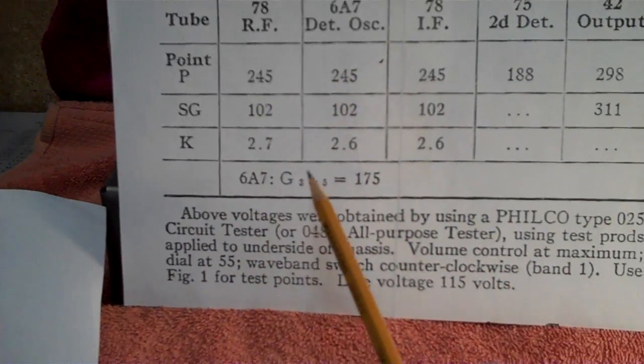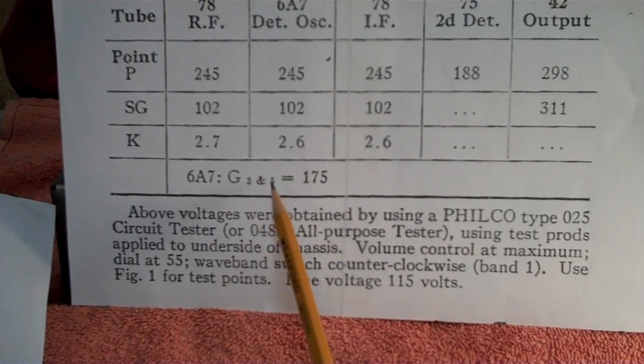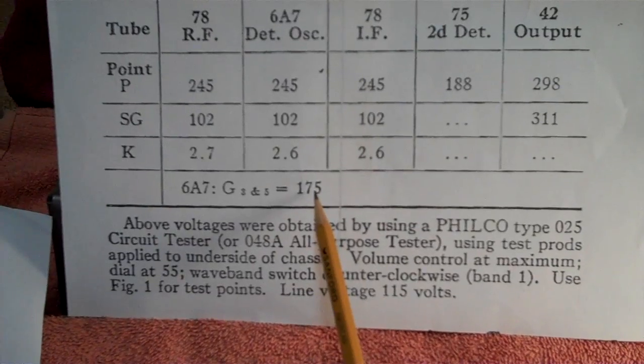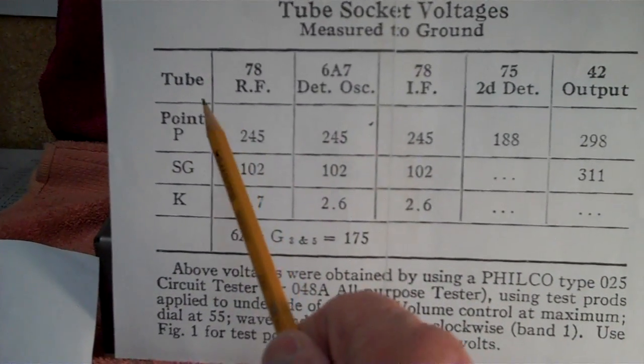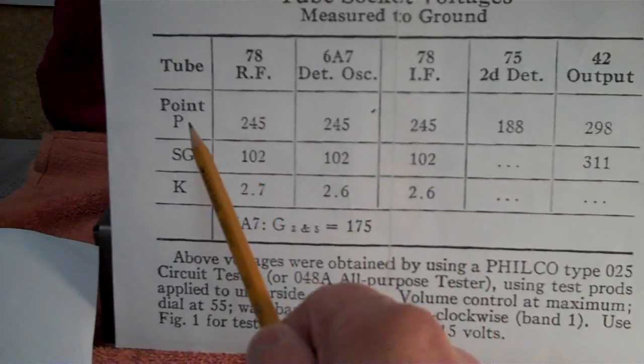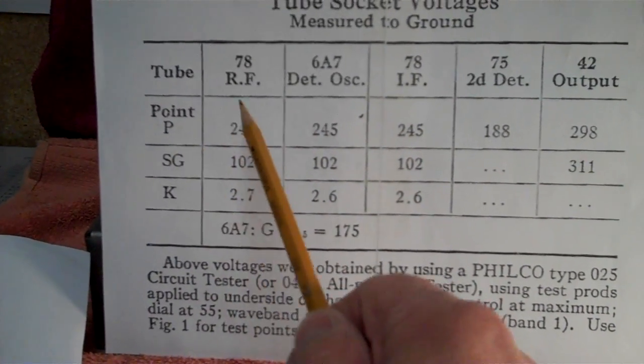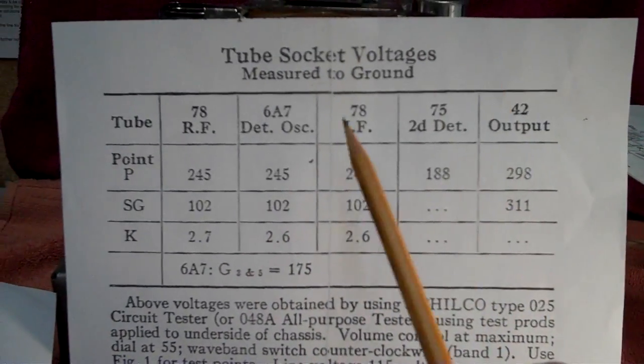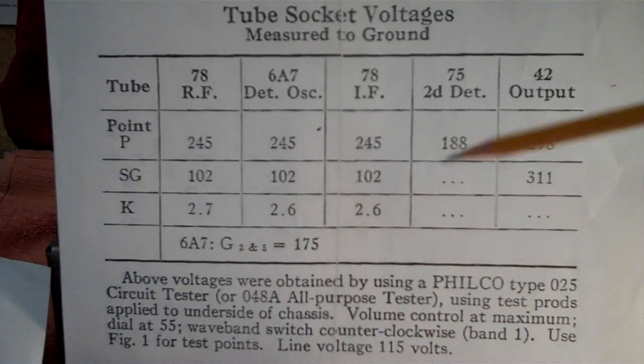And they even give a voltage here on the 6A7 for grid number 3 and 5, which in this case would be 175 volts DC. So what we're going to do is measure each of these pins and points, measuring voltage points on each of these tubes. But before we do, we need to find out what tube is that? What pin is that? I can't remember.